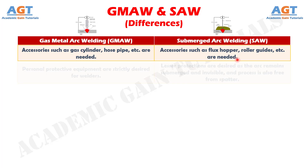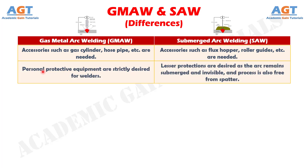Number 14: In gas metal arc welding, personal protective equipment are strictly desired for welders, whereas in submerged arc welding, lesser protections are desired as the arc remains submerged and invisible, and the process is also free from spatter.